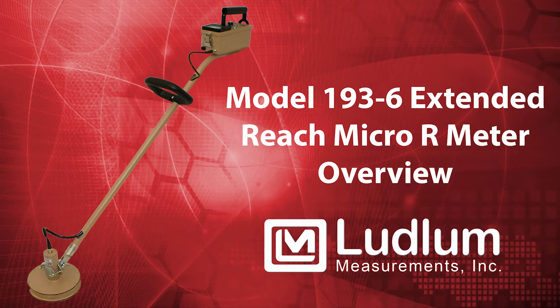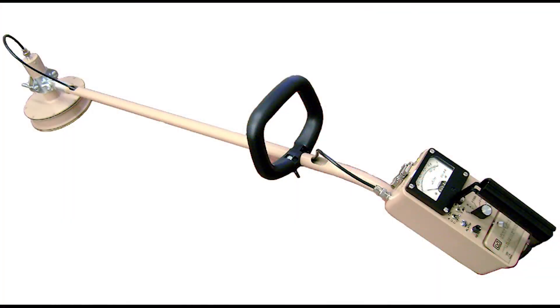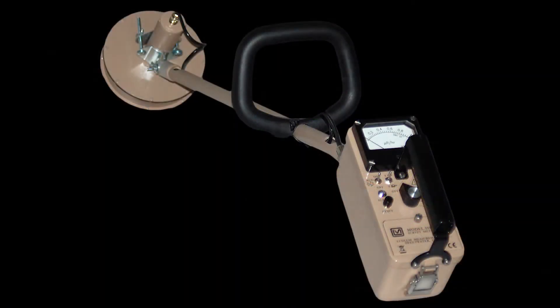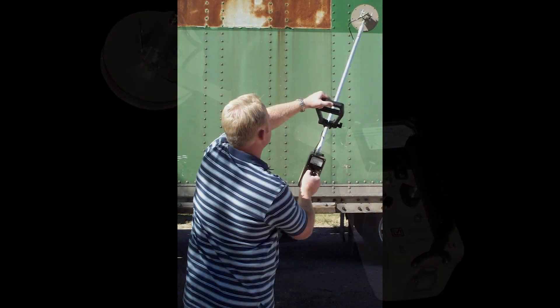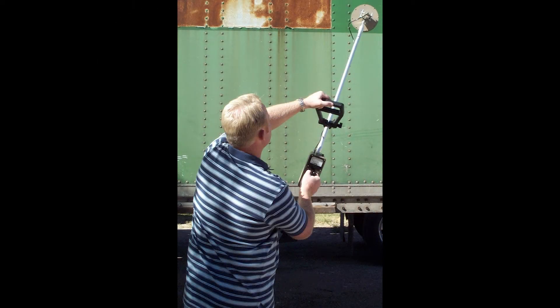The Ludlum Model 193-6 Survey Meter is a portable gamma survey instrument designed for surveying for gamma radiation. It's very effective for scanning large objects such as trucks or piles of scrap metal.